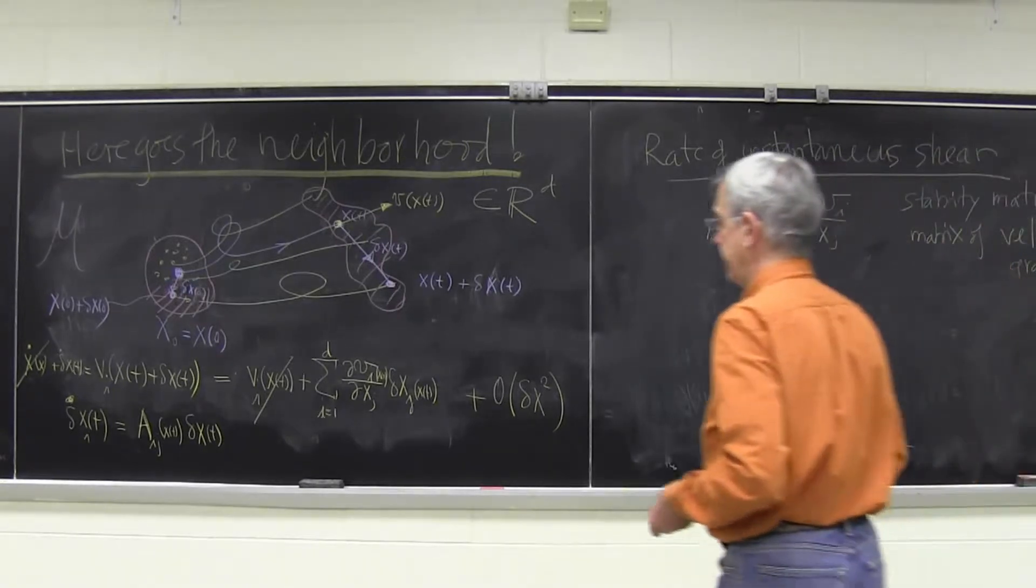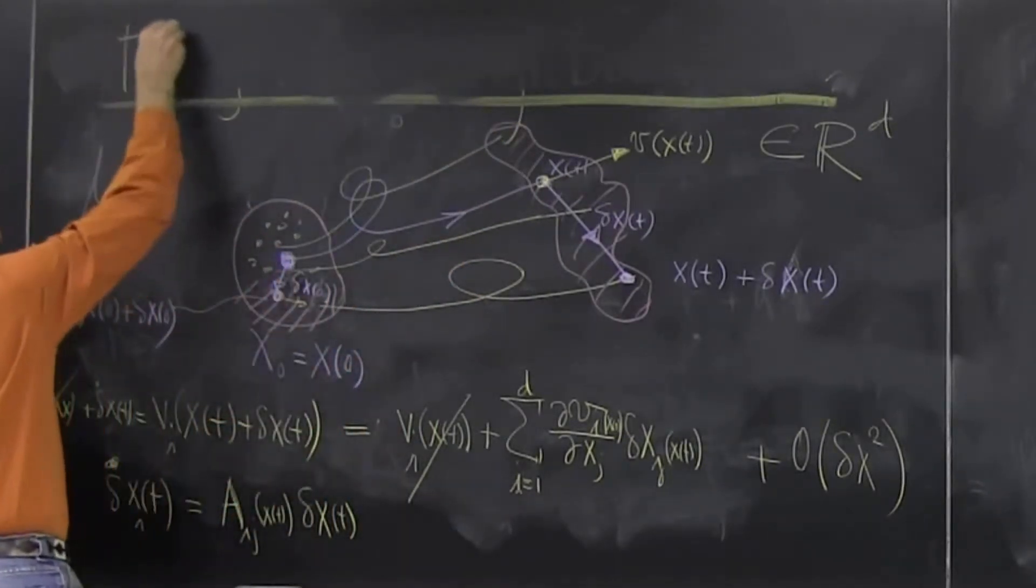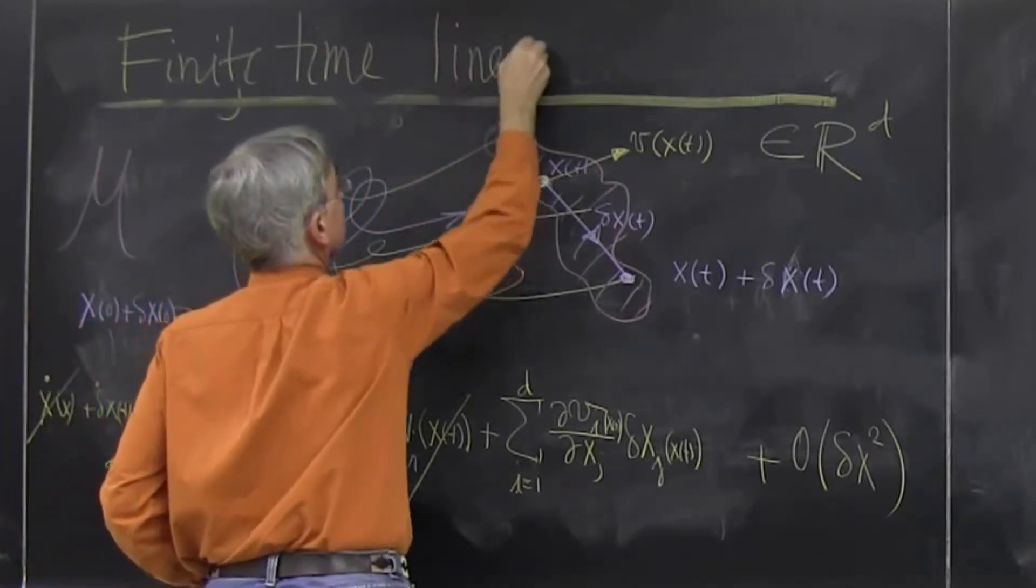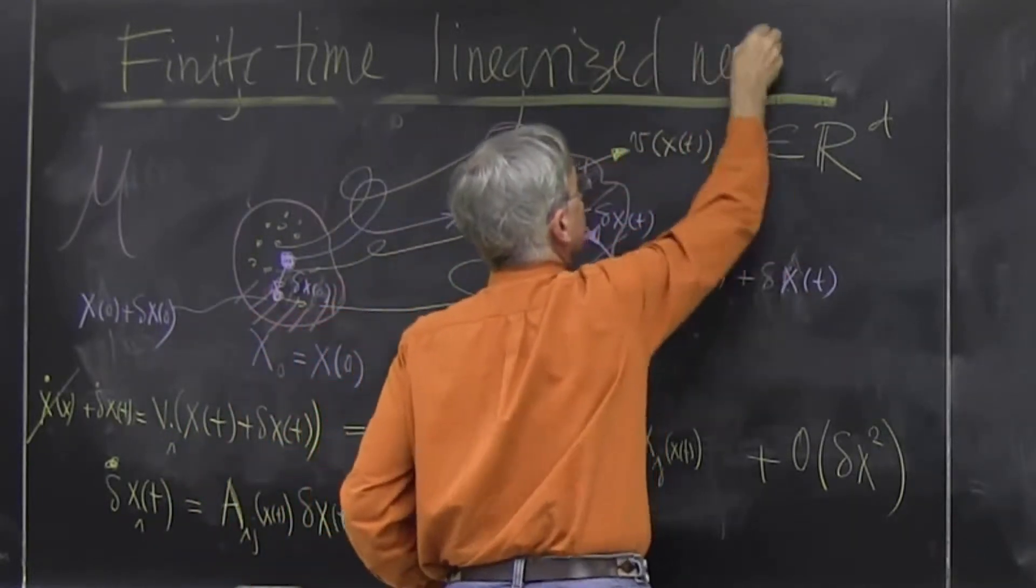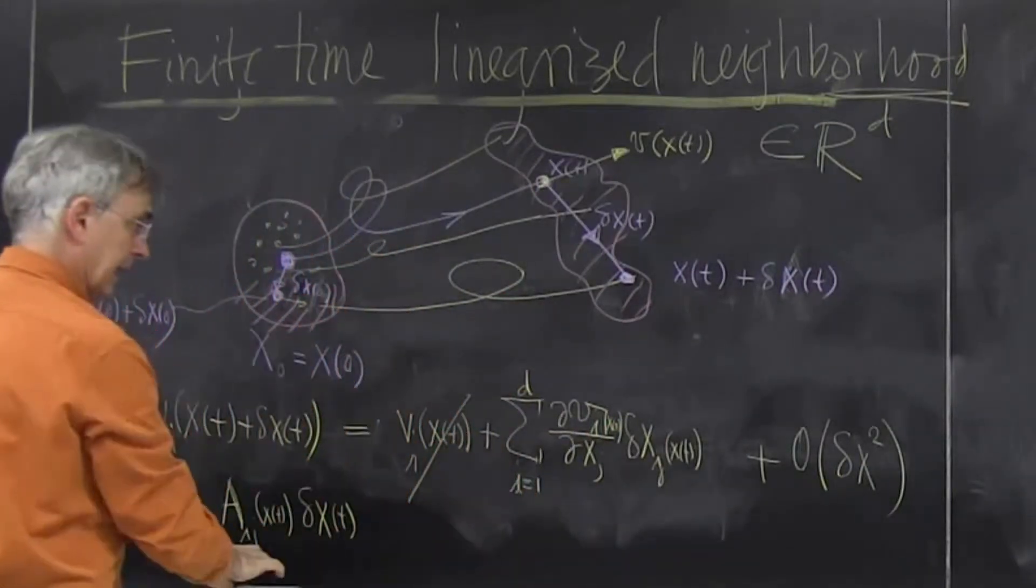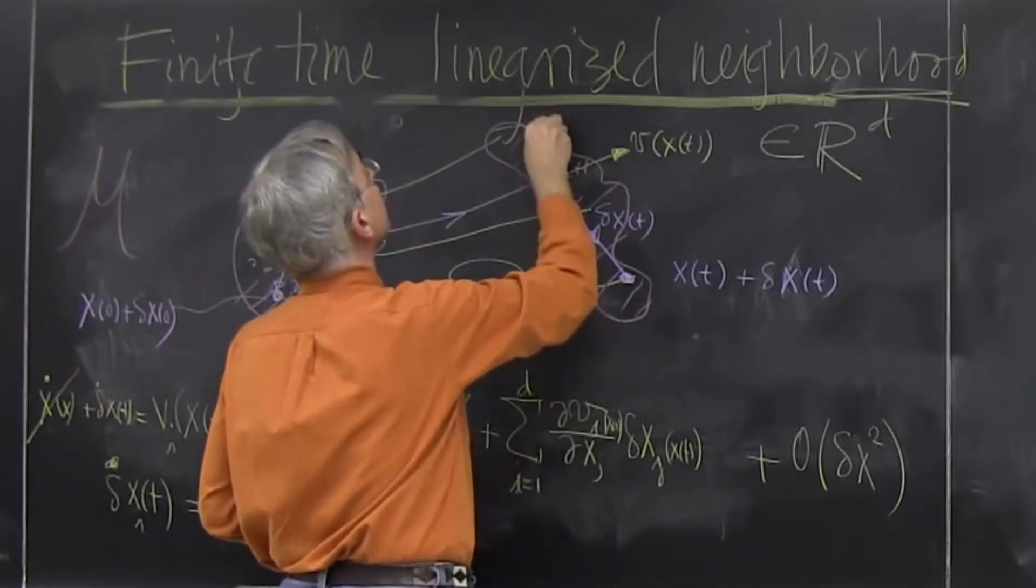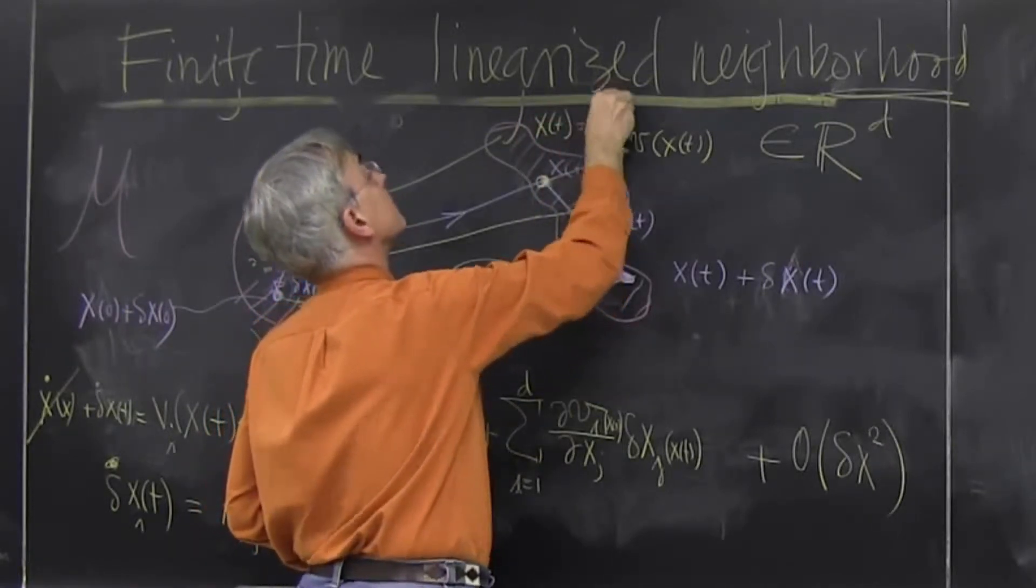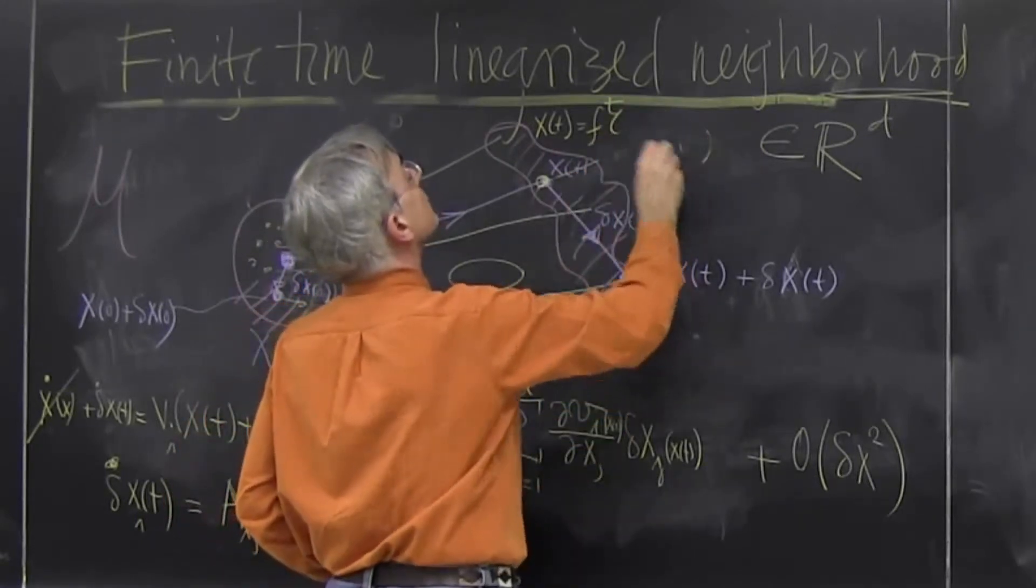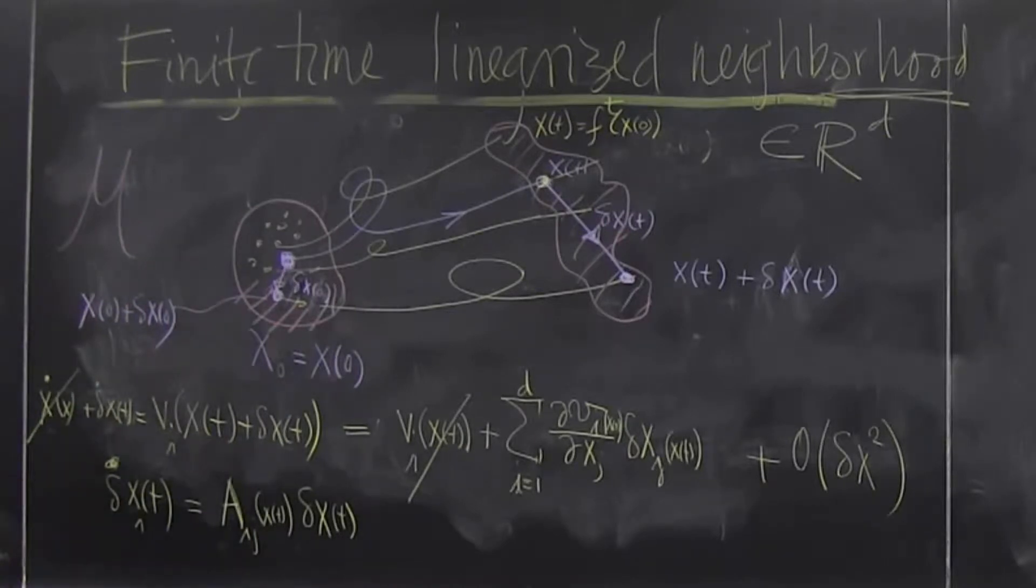So the thing we really care about is finite time. And that will look, the formula looks like the same, but I will actually look at the map. I'll look at x(t) as a time forward mapping of my initial point, x0. So it's a segment of the spaghetti or trajectory from 0 to t.